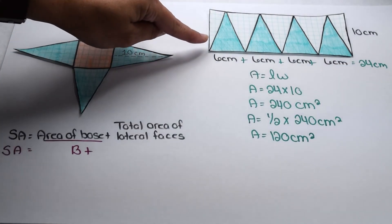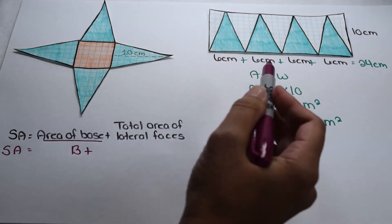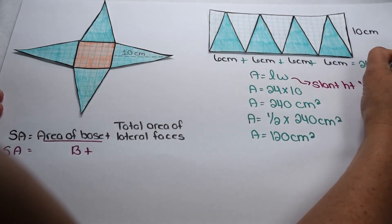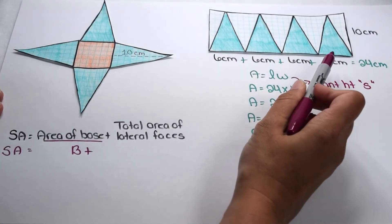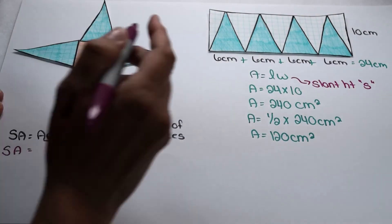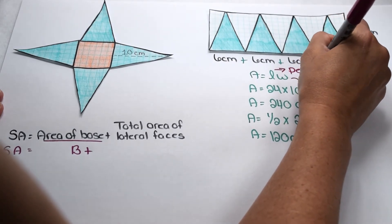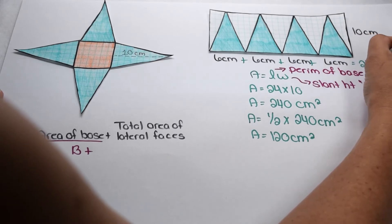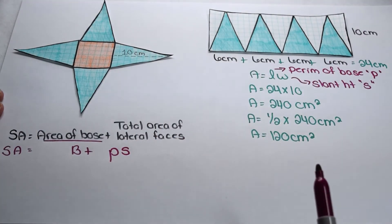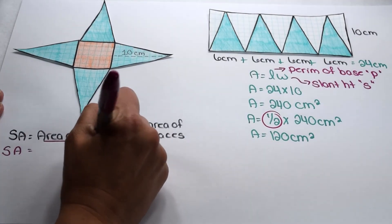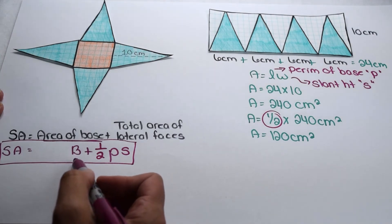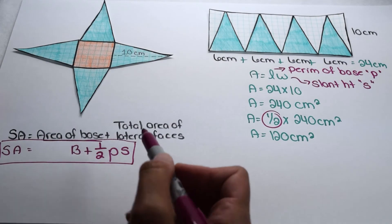That's the same as finding the area of one triangular lateral face and multiplying by 4. We can work this into a general formula. The width comes from the slant height, abbreviated as S. The length came from the bases of all our triangles, which are the edges going around the base of the pyramid — that's the perimeter of the base, abbreviated as P. And we only need half of P times S. So the surface area of a pyramid with a regular polygon base is: area of the base plus one half times the perimeter of the base times the slant height.